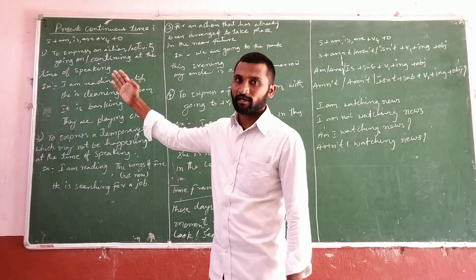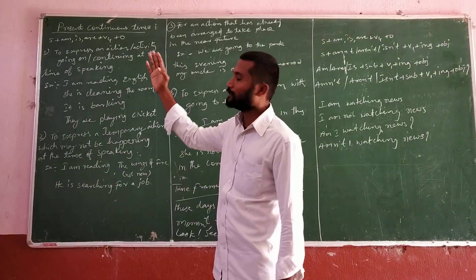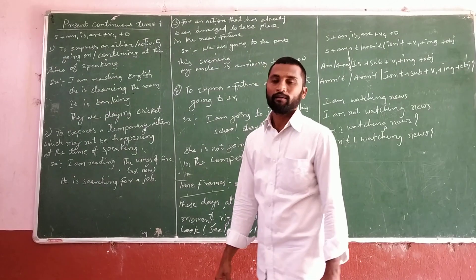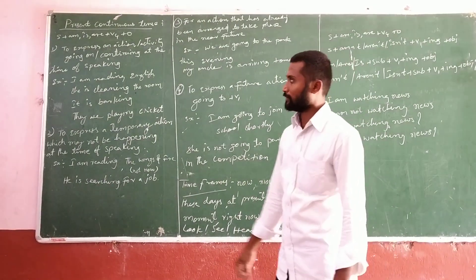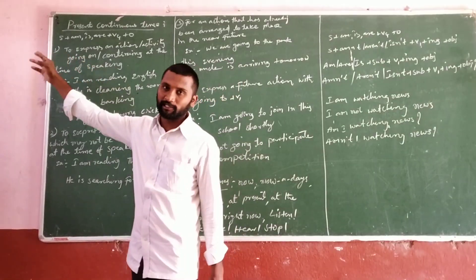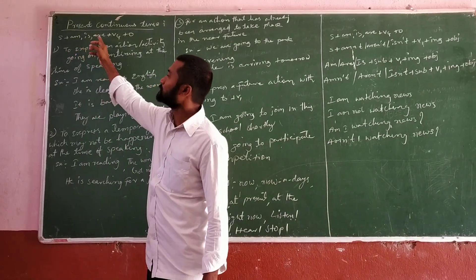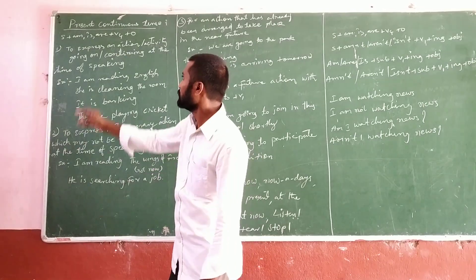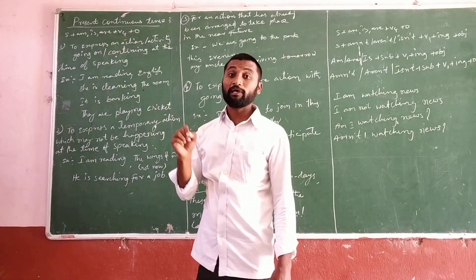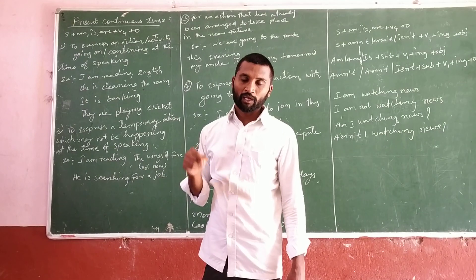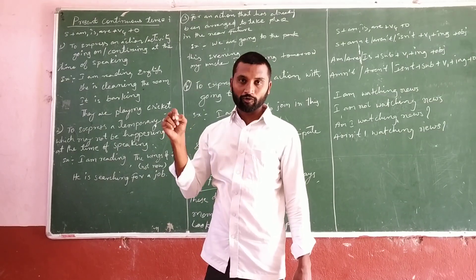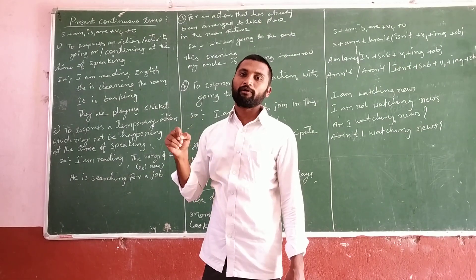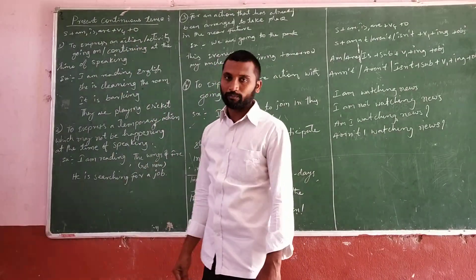If you see the structure of present continuous tense: Subject + am, is, or are + V4 + Object. S means subject here. Am, is, are are helping words — they are B forms. V4 means we can write it as V1 plus -ing. V1 plus -ing equals V4, and O stands for object.